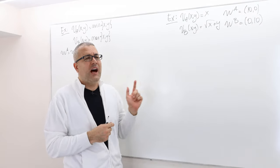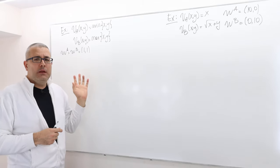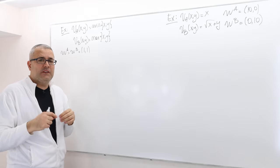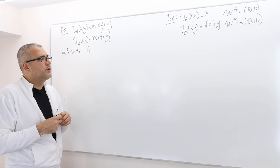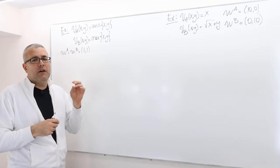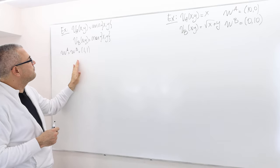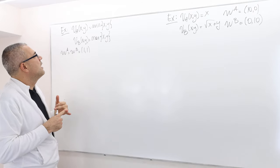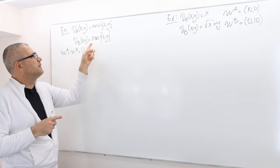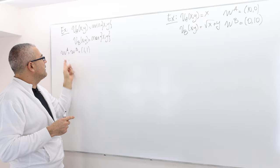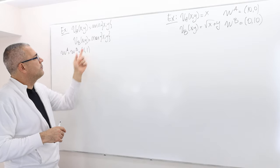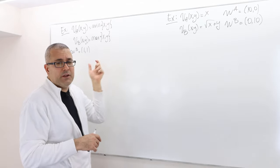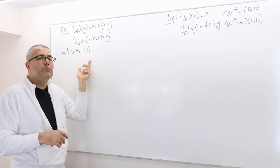I now have two examples where at least one of the assumptions for existence of Walrasian equilibrium fails to hold. In the first example, the utility functions are continuous and increasing, but not concave — agent B's utility function is in fact convex. The endowments are strictly positive, but the concavity assumption fails. I'm going to show that there is no Walrasian equilibrium in this example.